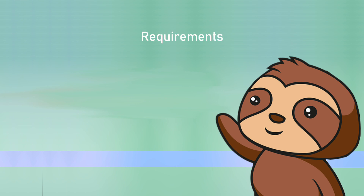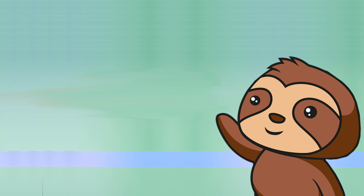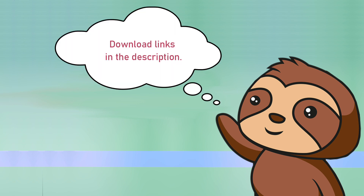Now we're starting this tutorial off with requirements. To follow this tutorial you'll need three different programs: Sims 4 Studio, Blender for 3D meshing, and 2D photo editing software. I'll provide all download links in the description below.